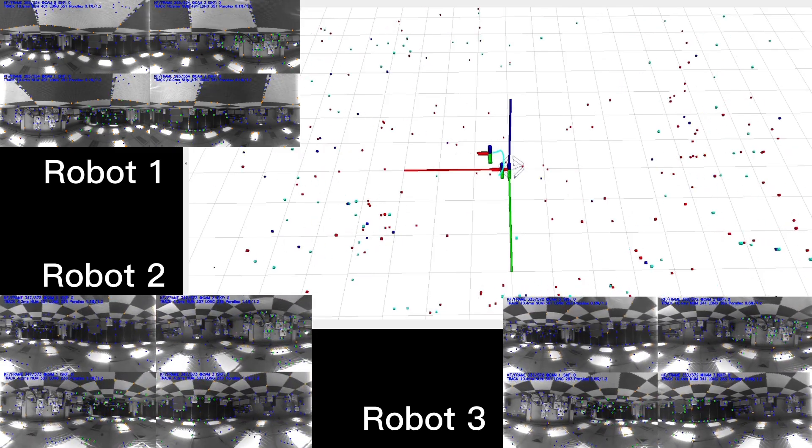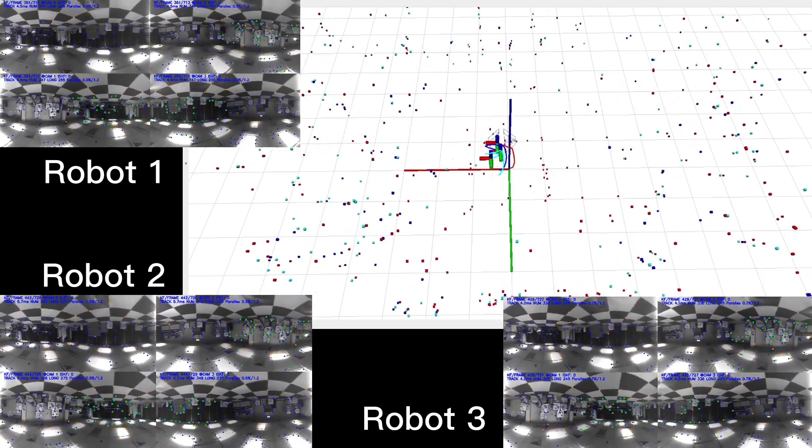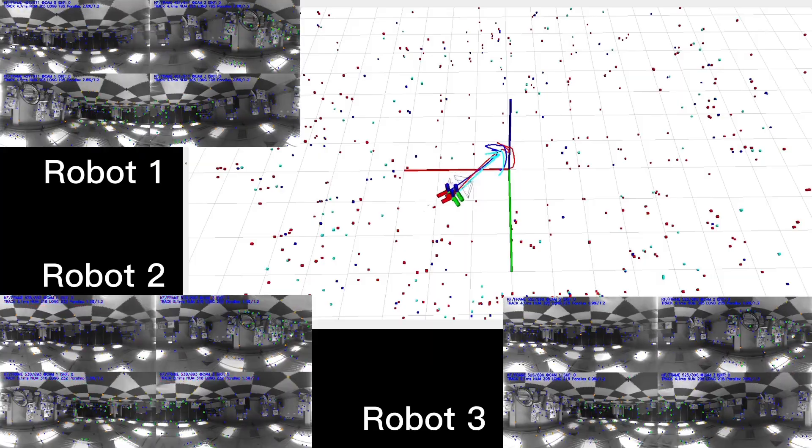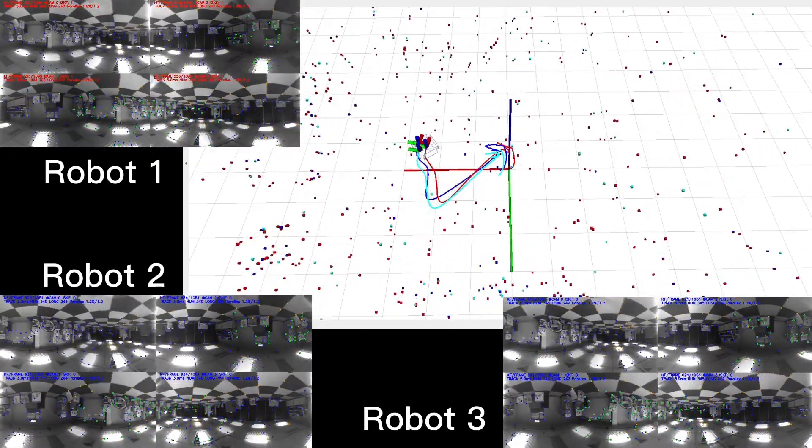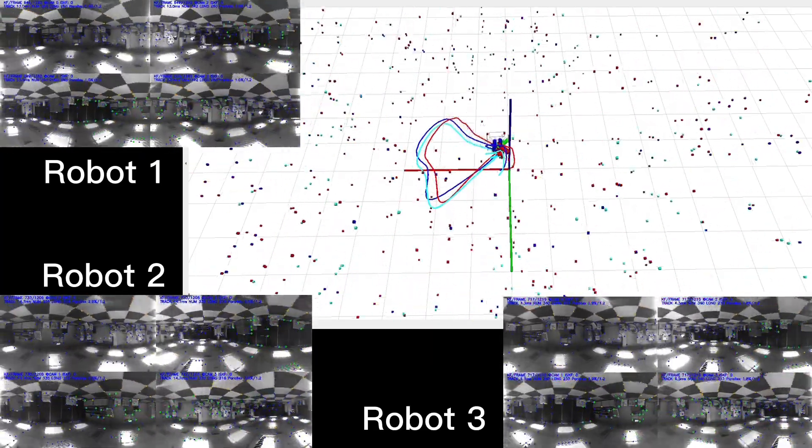Second, we show D-Square VINS running on our custom omnidirectional dataset. In this dataset, three UAVs continuously fly figure-eight trajectories.